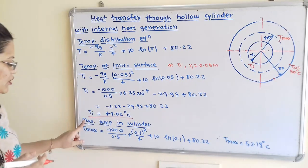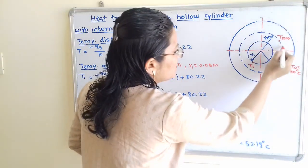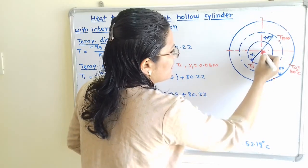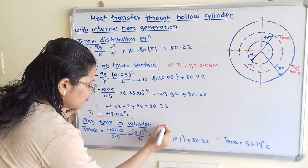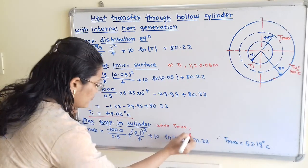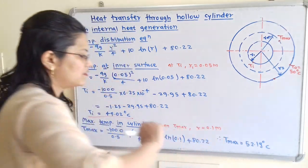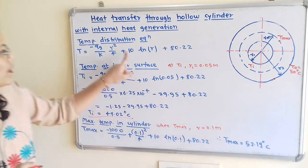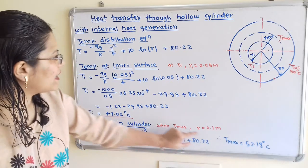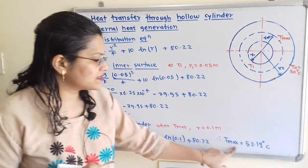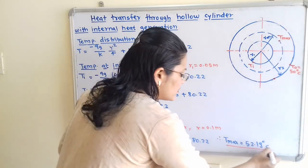For the second question, we find the maximum temperature in the cylinder. T_max occurs at R = Rm = 0.1 m. Substituting R = 0.1 into the temperature distribution equation, we get T_max = 52.19°C. This is the answer to the second question.